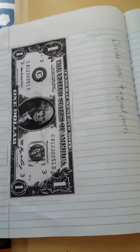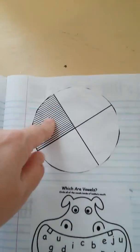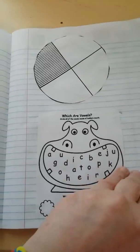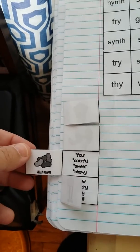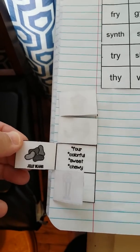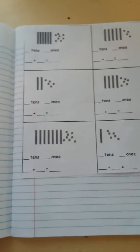Then it reinforces the quarter — we're going to take a red marker and divide a dollar into four equal parts, reinforcing a quarter again. It talks about vowels and you write the vowels in. These are words without vowels. Here we learn about adjectives — jelly beans: they're colorful, they're sweet, and they're chewy — so we'll learn what an adjective is. The last thing in here so far is place value. She's really good at place value but I just want to go over it again and make sure she understands it.